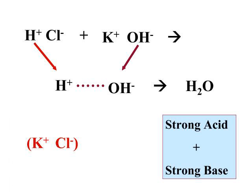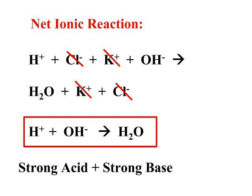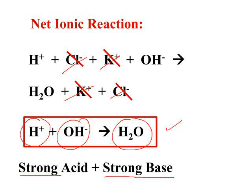When you look at the chemistry between acids and bases, the dissociated H+ and OH- ions combine to form water, leaving you with the spectator ions from the strong acid and the strong base. A strong acid and strong base will always make a soluble salt and water. Notice that with the strong acid/strong base reaction, your spectator ions leave, leaving you with H+ and OH- forming water. So anytime you have a strong acid/strong base reaction, this is your net ionic equation: H+ + OH- → H2O.